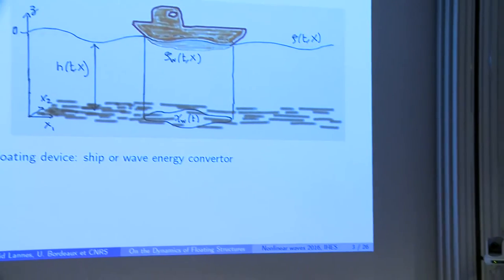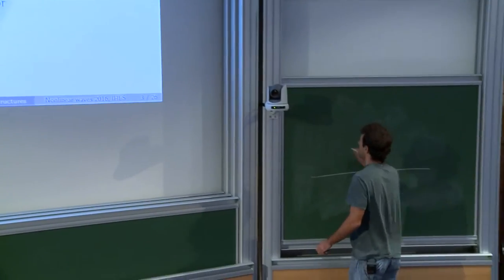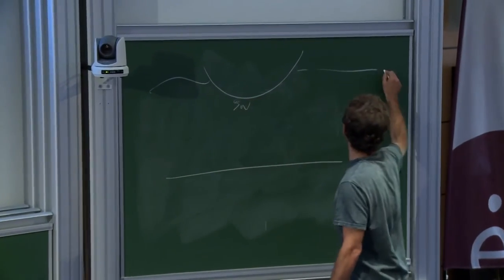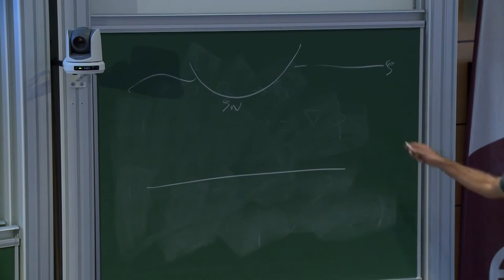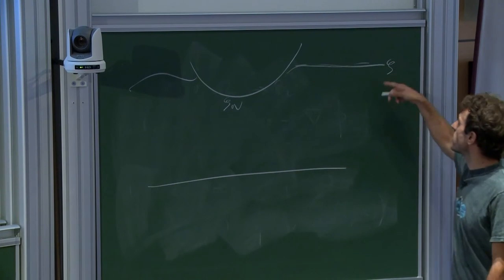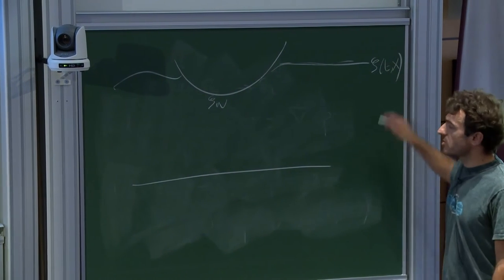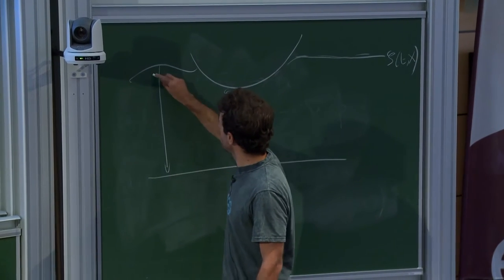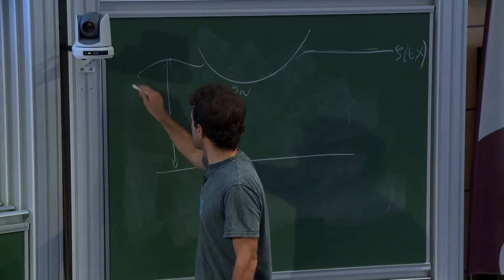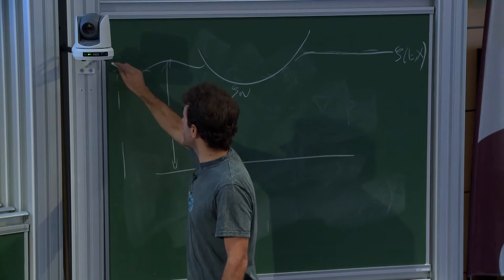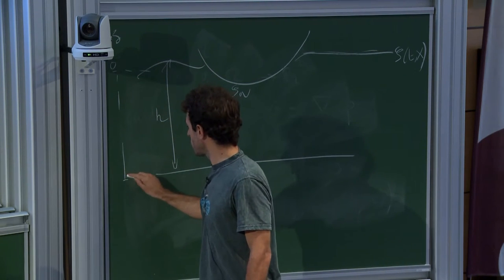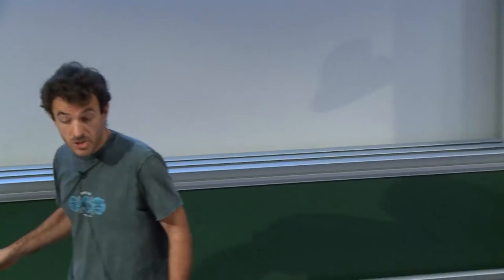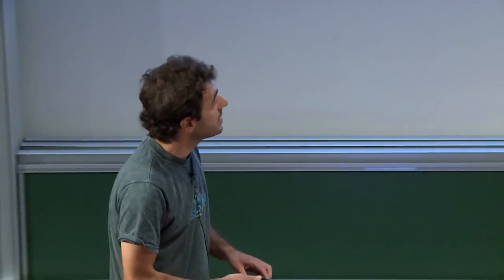The surface of the water is always parametrized by a function zeta of t and x. x is a horizontal dimension and the total depth of the fluid will be h. If I have the rest at z equals 0, the bottom will be at minus h_0. I could handle without any problem some non-flat bottoms, but I will do it for simplicity with a flat bottom.